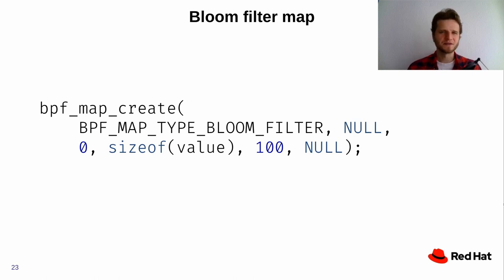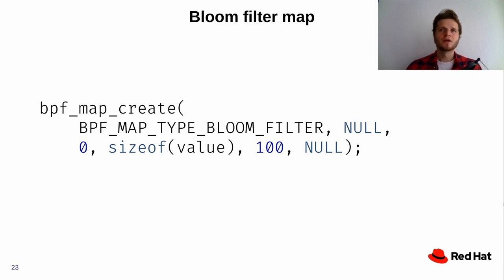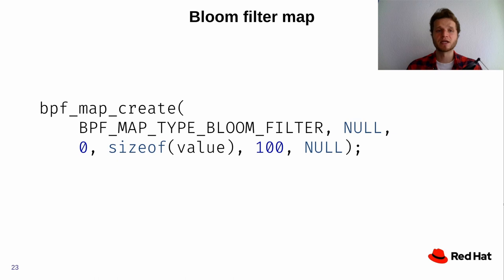Another very interesting and inspiring addition is the bloom filter map. If you're unfamiliar, a bloom filter is a probabilistic data structure that allows extremely fast verification of whether an element is present. It's probabilistic in the sense that you can get deterministic 'no' answers — the element is definitely not present — but 'yes' answers may be false positives that require verification. If you need to determine that something is not present, it's a perfect data structure. This has been implemented in the kernel as a map type, which is a great addition.